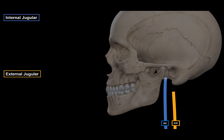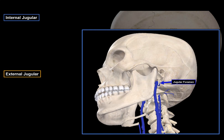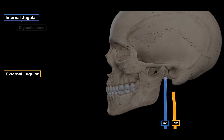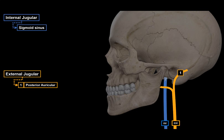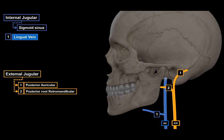The internal jugular vein passes through the jugular foramen and drains blood from the sigmoid sinus. The sigmoid sinus is one of the dural sinuses in the brain — they lie in the two layers of the dura mater, and I'll cover the dural sinuses in my next video. The external jugular vein, however, divides into the posterior auricular vein and the posterior root of the retromandibular vein. This will become more logical later.